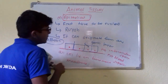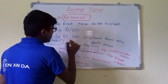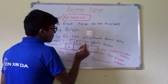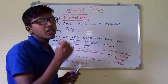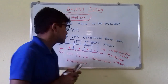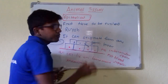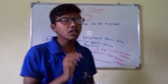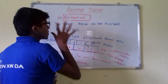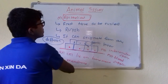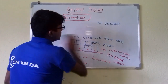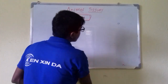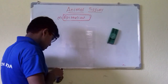The epithelial cell layer may be a single layer or multiple layers, but the lowest layer of cells will always rest on the basement membrane. The basement membrane is noncellular and has collagen fibers. Epithelial tissues have two types: simple and compound.